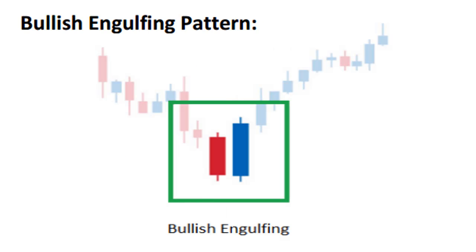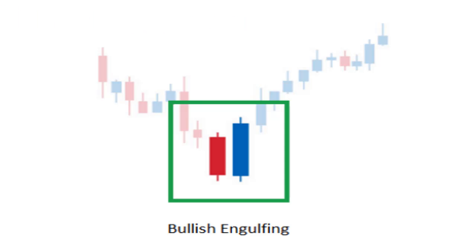Bullish engulfing pattern is a two-candlestick bullish reversal pattern. First there should be a downtrend, then a red candle followed by a green candle whose body engulfs the body of the first red candle. In the second candle, the day started below the previous day's close on a bearish note. However, as the day progresses, the bulls take over and eventually succeed in closing above the previous day's high. If the highest point of these two candlesticks is breached on the upside within the next two to three candles, the pattern is confirmed. A buy trade can be initiated upon confirmation with stop loss below the low of the two candlesticks.